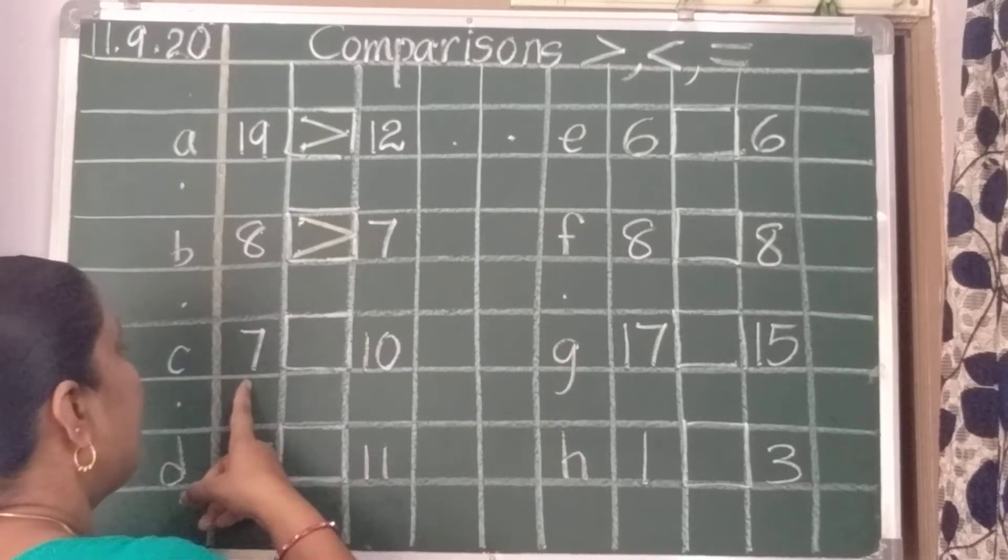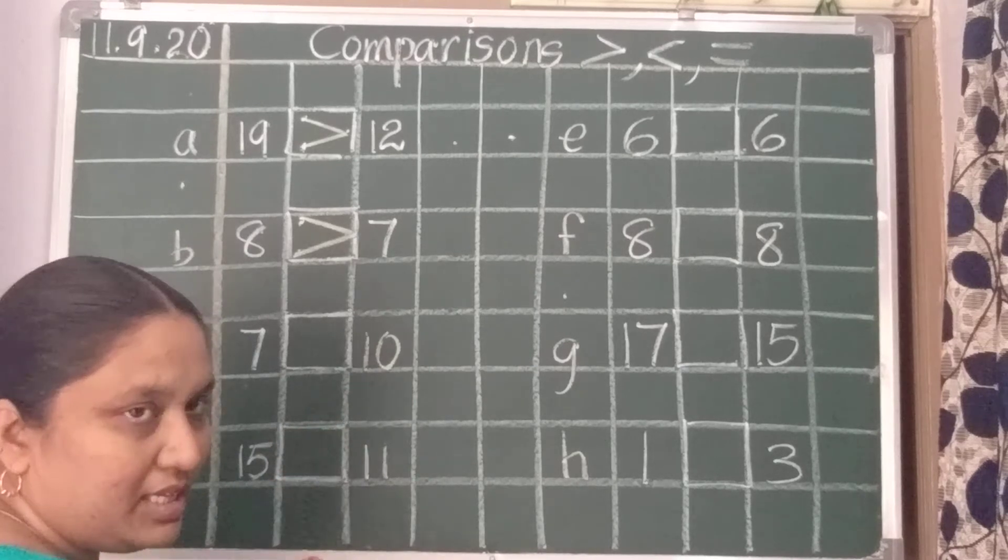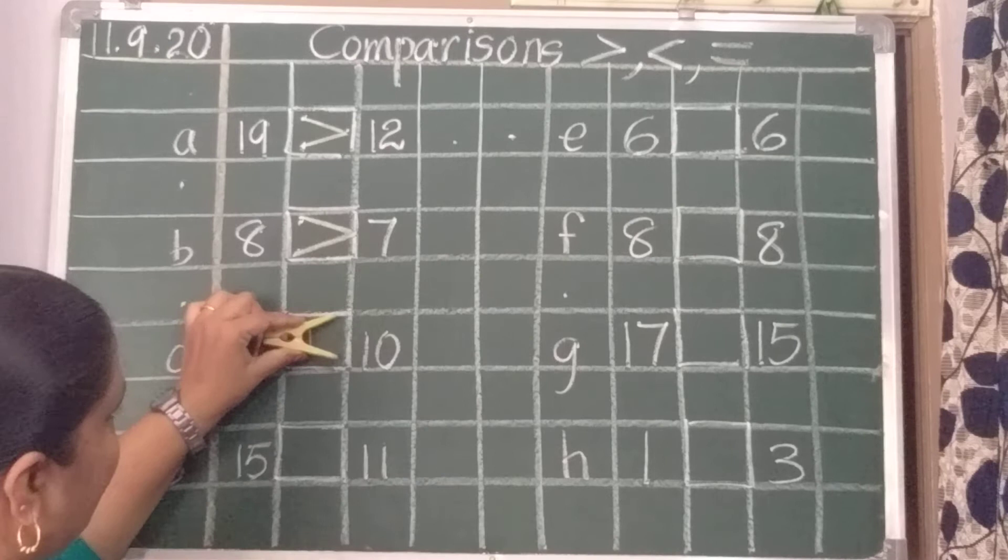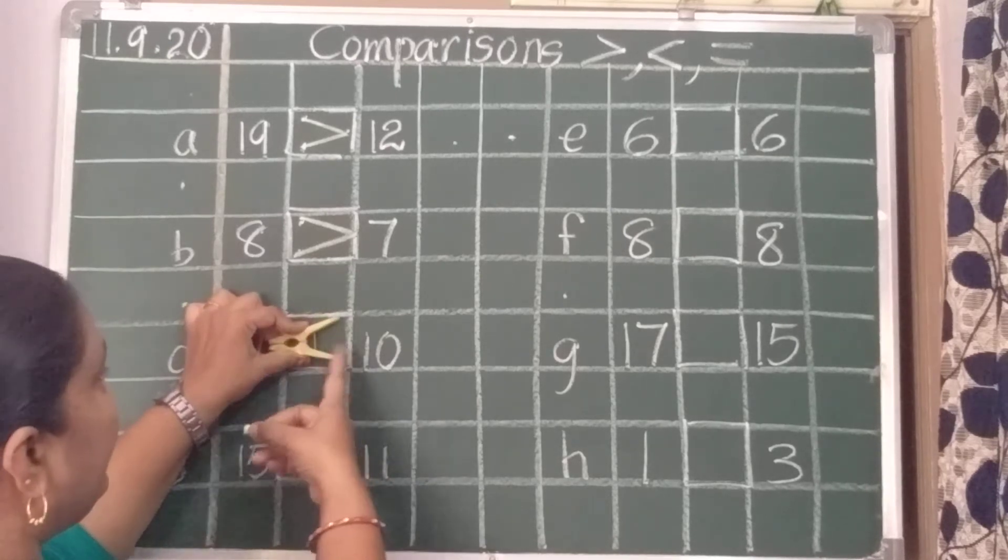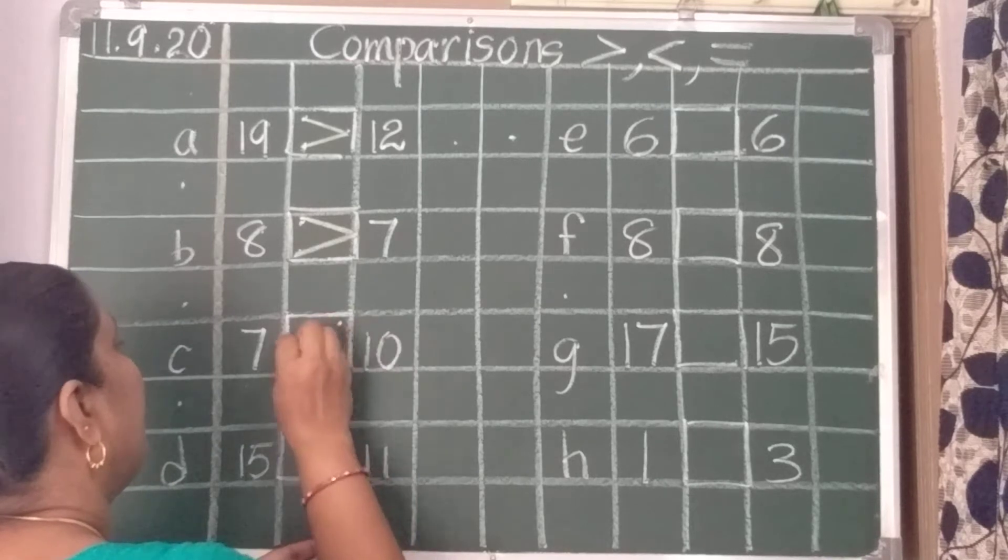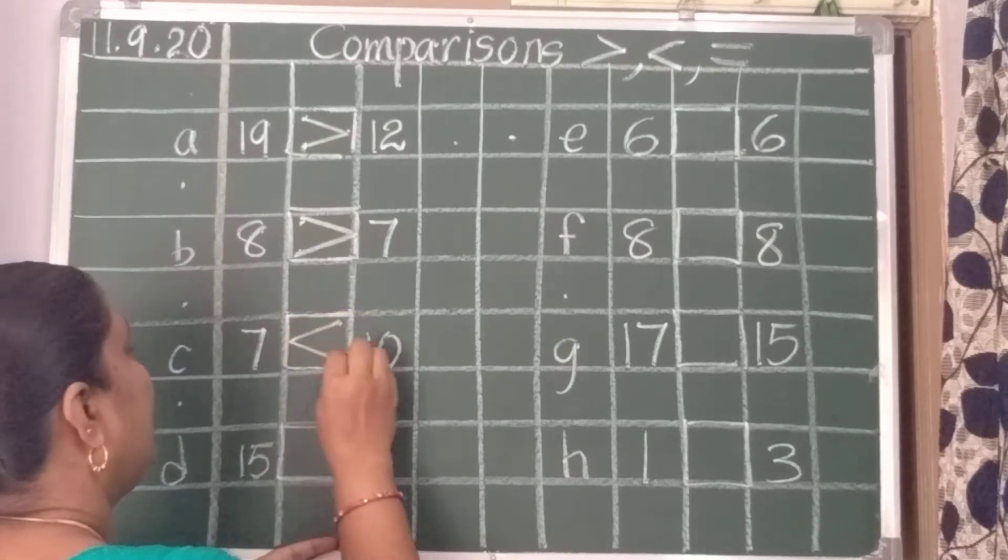Next, number 7 and 10. Which is the biggest number? 10. So this side now. The crocodile mouth will be open to which side? 10. Two dots and one dot. Now, join the dots.